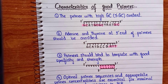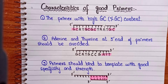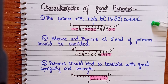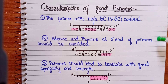Let's discuss the basic characteristics and protocols we have to follow when designing primers. The first characteristic is high GC content. Guanine and cytosine form three hydrogen bonds, so a primer with high GC content will bind to the template with good specificity and strength.